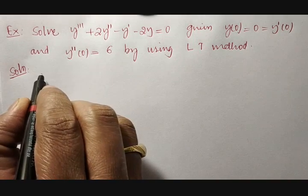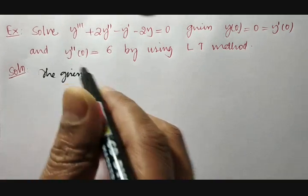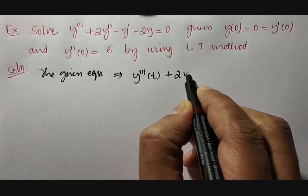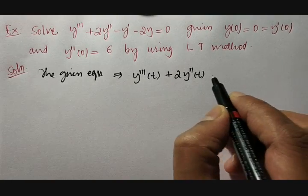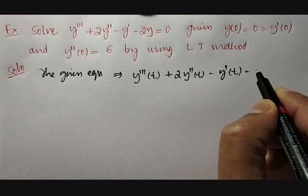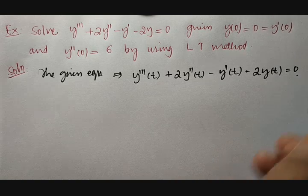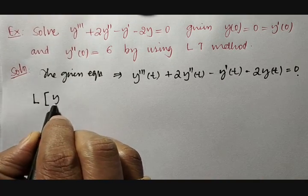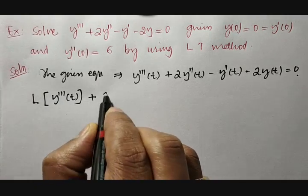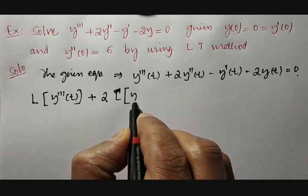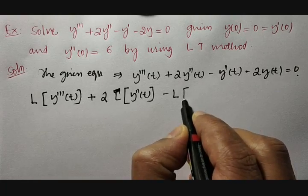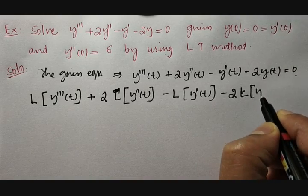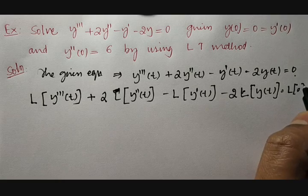First, write down the given equation in a proper way. The given equation can be written as y triple dash of t plus 2 times y double dash of t minus y dash of t minus 2 times y of t equal to 0. Now apply Laplace transform on both sides.